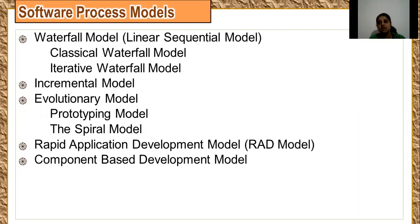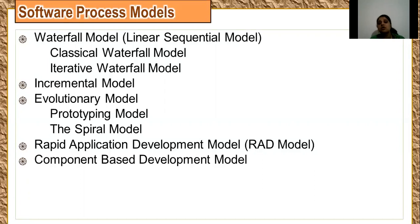Word documentation can be the main functionality. After this core product is delivered in the first increment, they can provide functionalities like file management and editing in the second increment. They can provide spelling checking and grammar checking. In the third increment, they can provide page layout, margins, etc. So when your basic requirements are delivered and supplementary requirements are undelivered, and you are focusing on delivery of an operational product with each increment, then this model is called the incremental model.